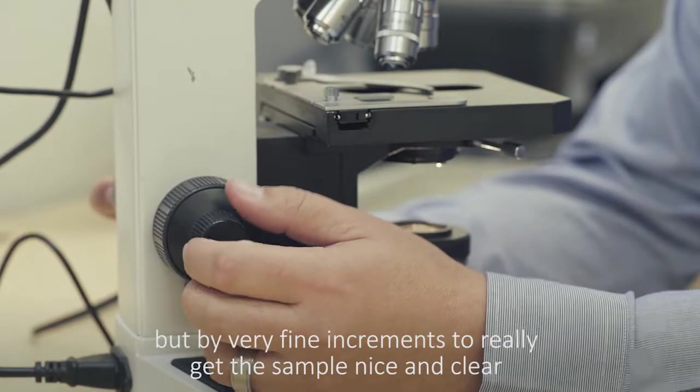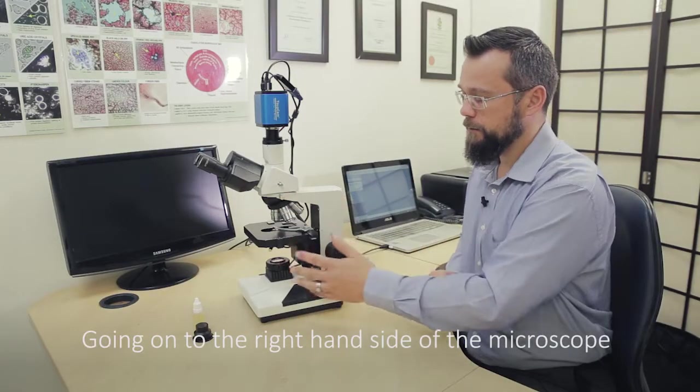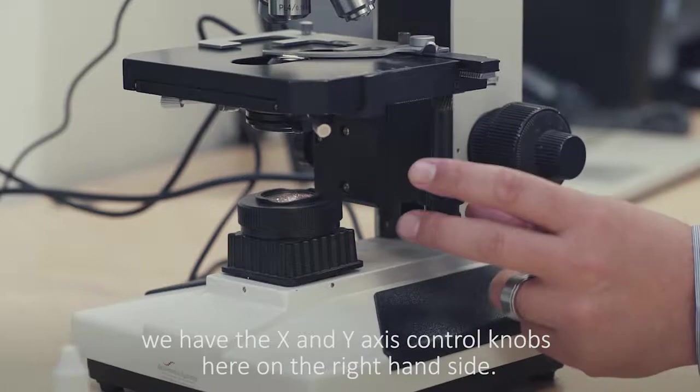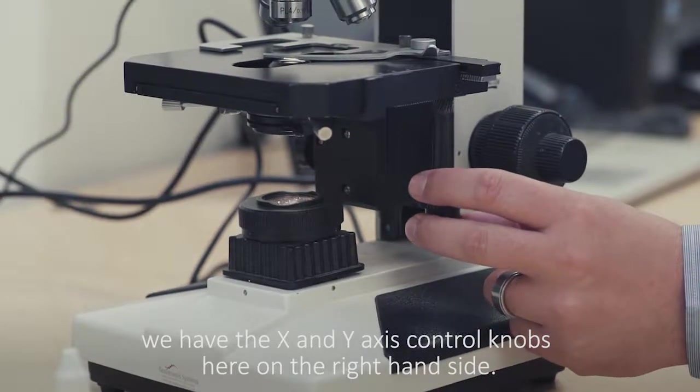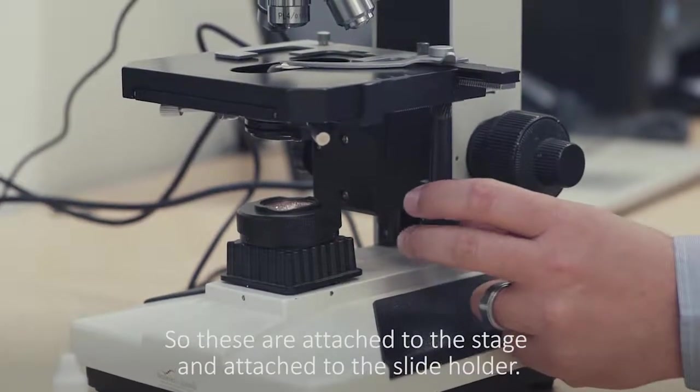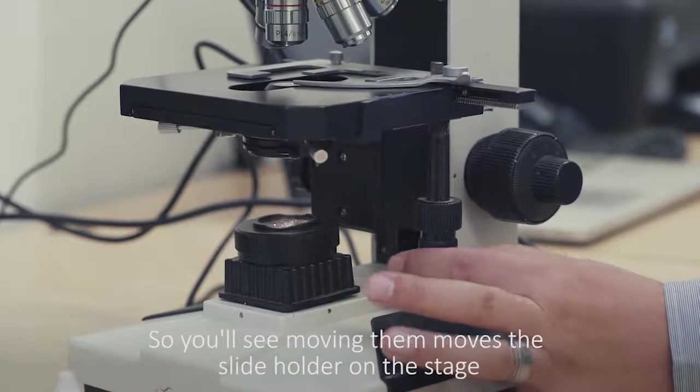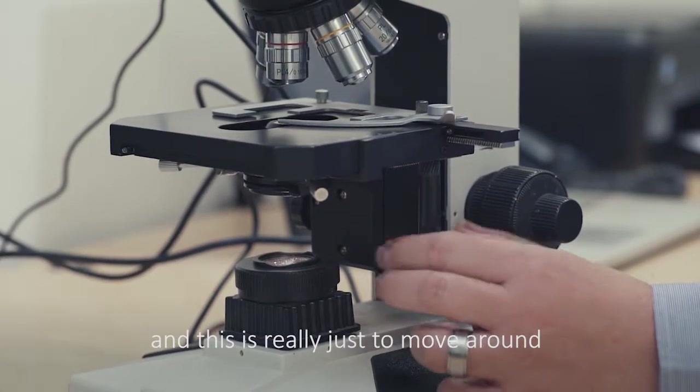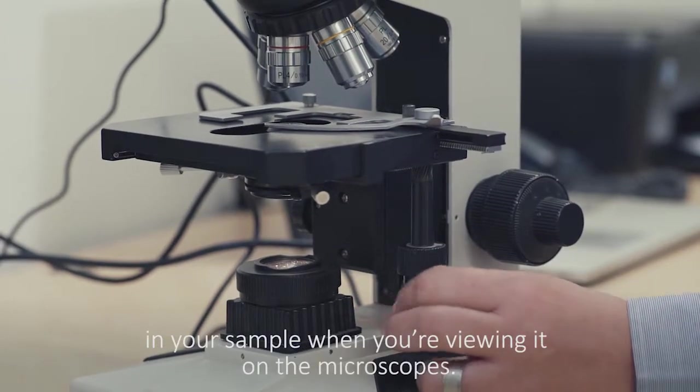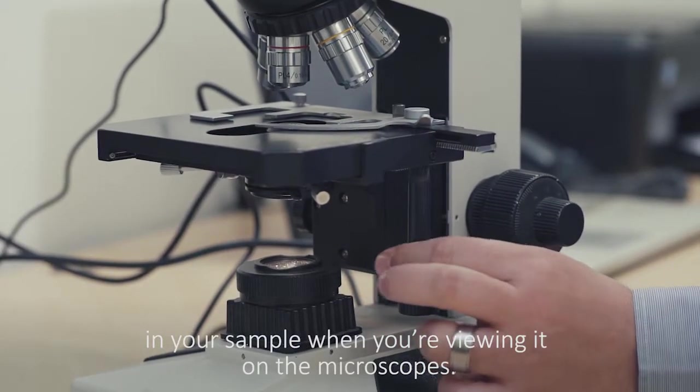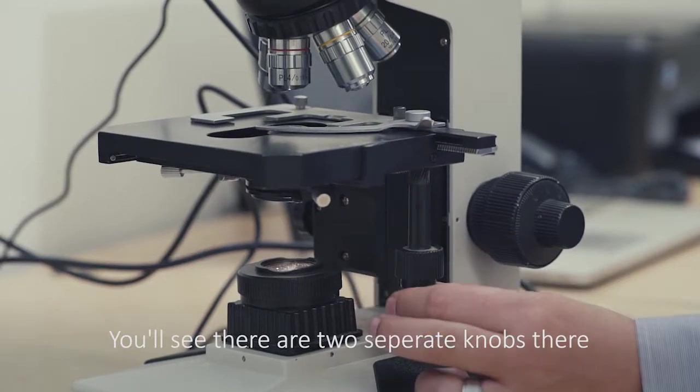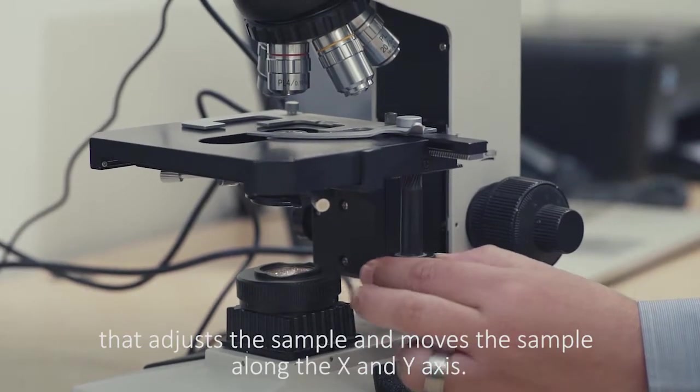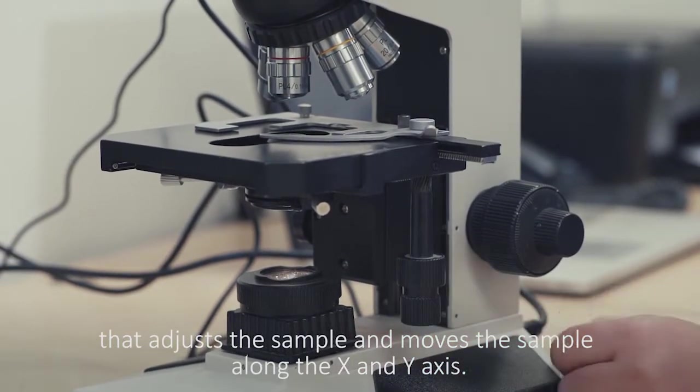Going on to the right hand side of the microscope, we have the X and Y axis control knobs here. These are attached to the stage and attached to the slide holder. You'll see moving them moves the slide holder on the stage. This is really just to move around in your sample when you're viewing it on the microscope. These two separate knobs adjust the sample and move the sample along the X and Y axis.